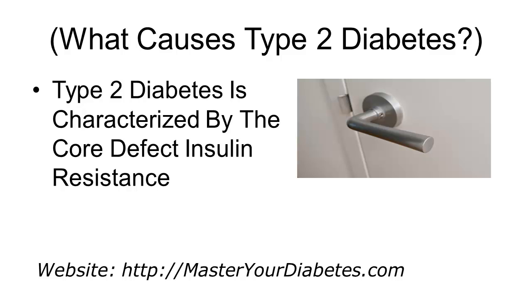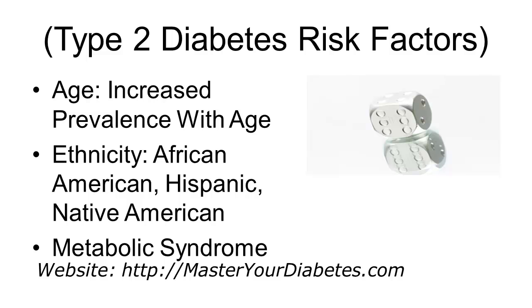Most doctors feel that the cause of type 2 diabetes stems from being a certain ethnic background. In clinical terms, there are several factors that increase your risk of developing type 2 diabetes. Age is one: the prevalence increases with age, with about one in every four people over 65 having diabetes, although in recent years the prevalence is increasing in younger people.